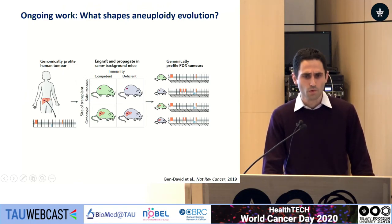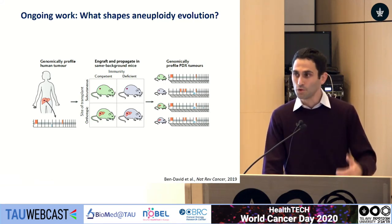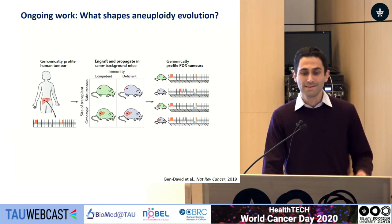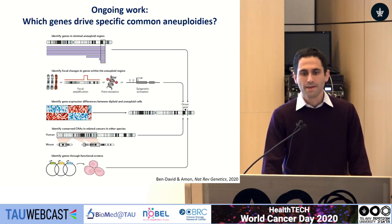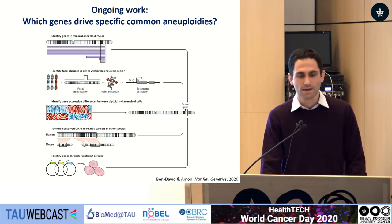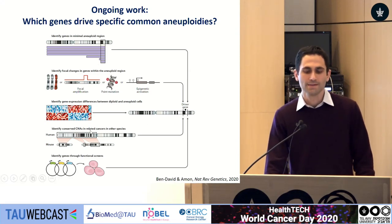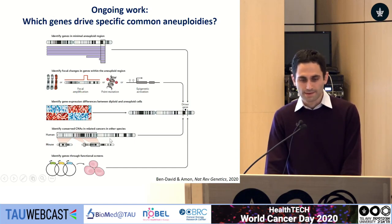I'd like to conclude by telling you about the work we're currently doing in the lab. We're interested in three major questions. One is: what shapes aneuploidy evolution? For example, when we transplant human tumors into mice, we change several important parameters at once — is it the species, metabolism and physiology, the site of transplantation, or the immune system? We are trying to systematically dissect these parameters. Second, we're interested in identifying driver genes that underlie the recurrence of specific events, combining experimental and computational approaches to identify genes that highlight the tumorigenic role of recurrent aneuploidies.